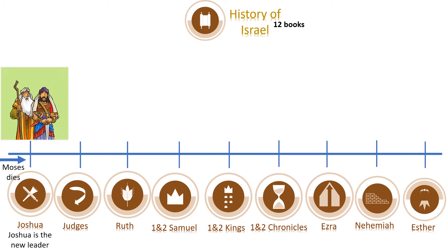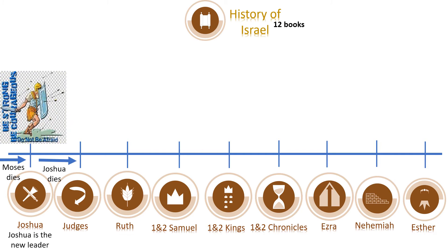Now we are in the 12 books of the history of Israel. Before dying, Moses appoints Joshua as the new leader of the Israelites. Joshua not only leads the people into the promised land but also helps them win wars with different nations who occupied the promised land. However, Joshua dies and the Israelites lose another leader.